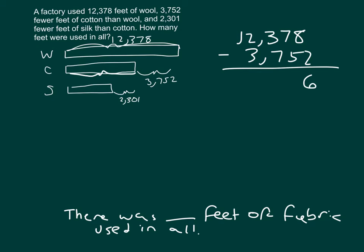8 minus 2 is 6. 7 minus 5 is 2. 3 minus 7 — we can't do that, so we regroup: 2 becomes 1, 3 becomes 13. 13 minus 7 is 6, then one more regroup, giving us 11 minus 3 equaling 8. So the amount of cotton is 8,626.